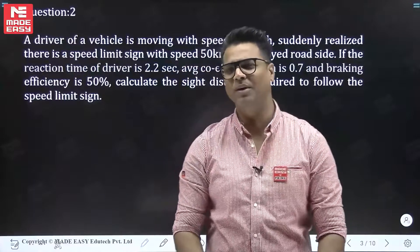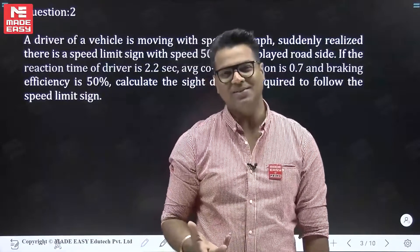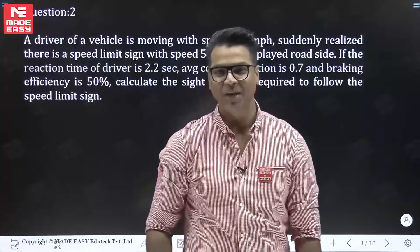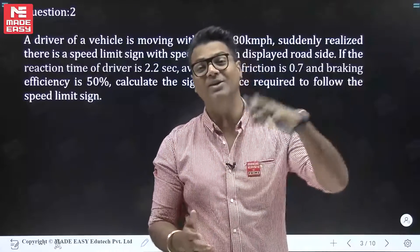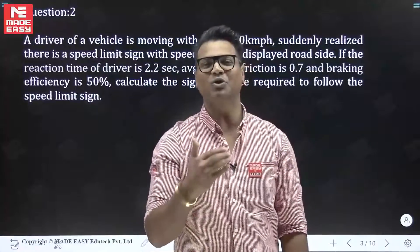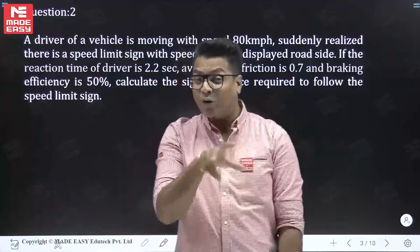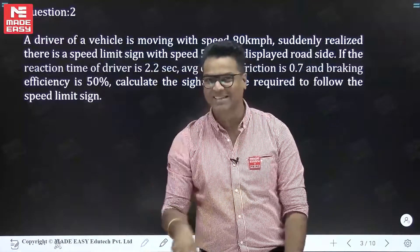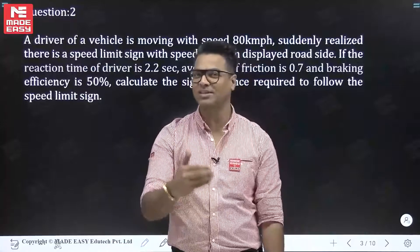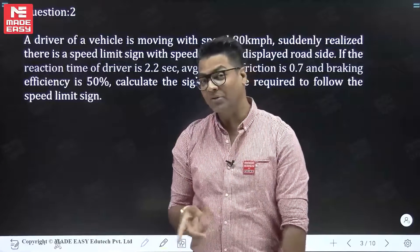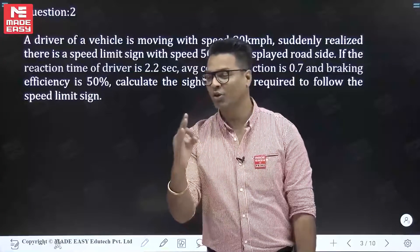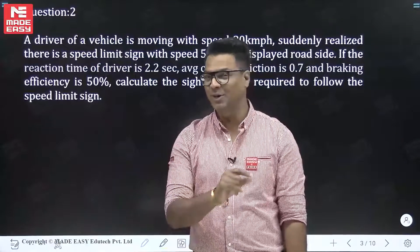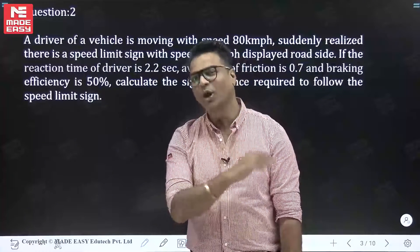In stopping sight distance questions, the vehicle ultimately stops somewhere and the derivation and IRC norms are taken accordingly. But in the GATE examination, they always change something from the actual theory. Here, the vehicle is not going to stop — the vehicle intends only to reduce the speed from 80 to 50 km/h.